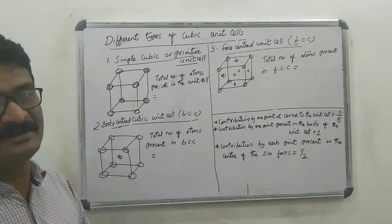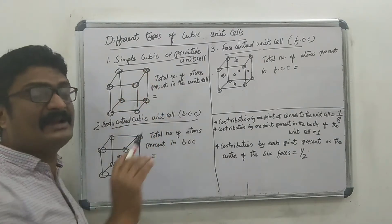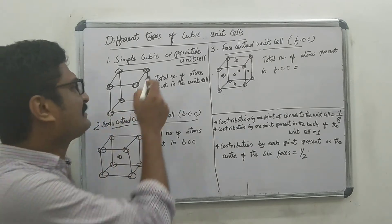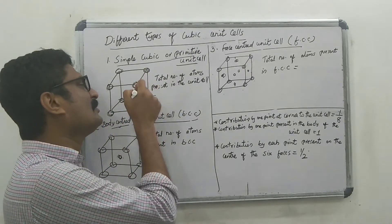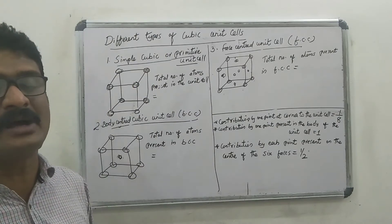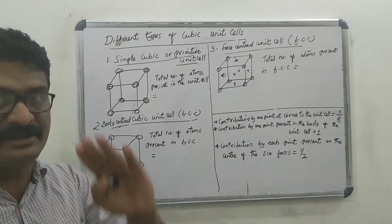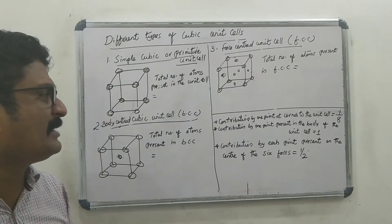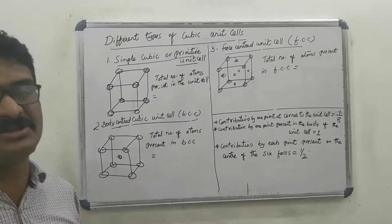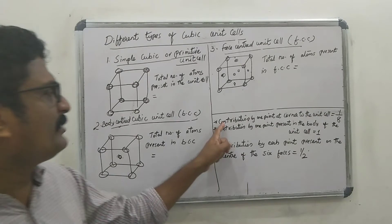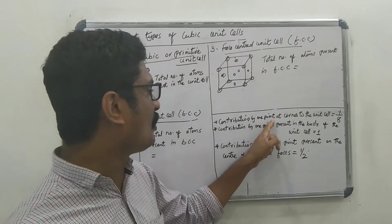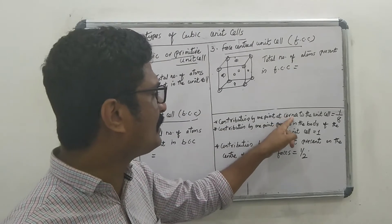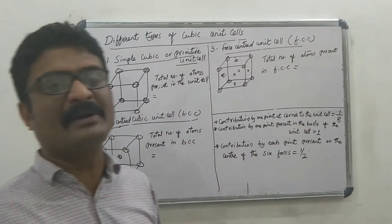Each corner atom is shared by 8 unit cells. So the contribution by one corner atom to one unit cell is 1/8. The corner atom contribution to the unit cell is equal to 1/8.